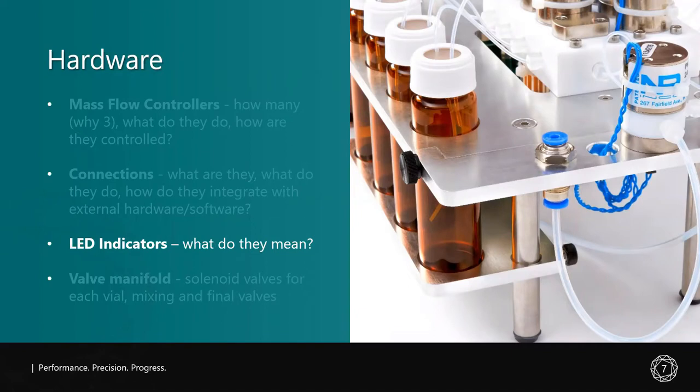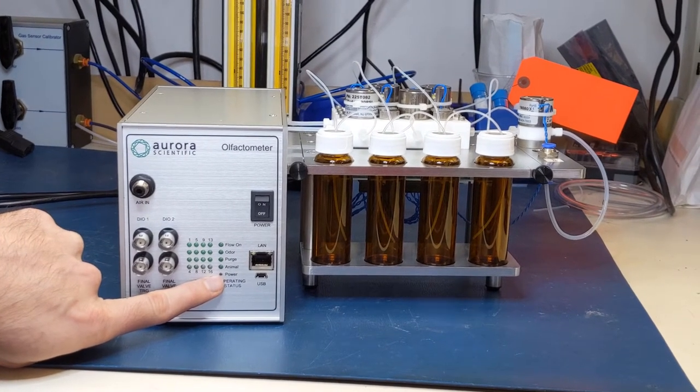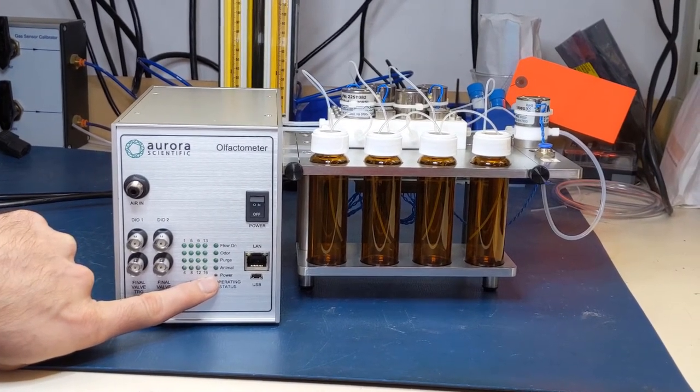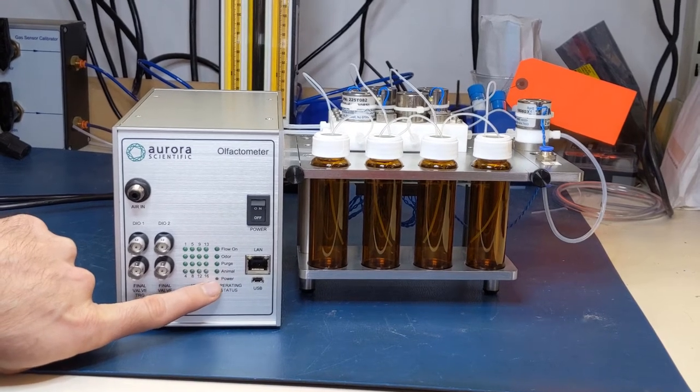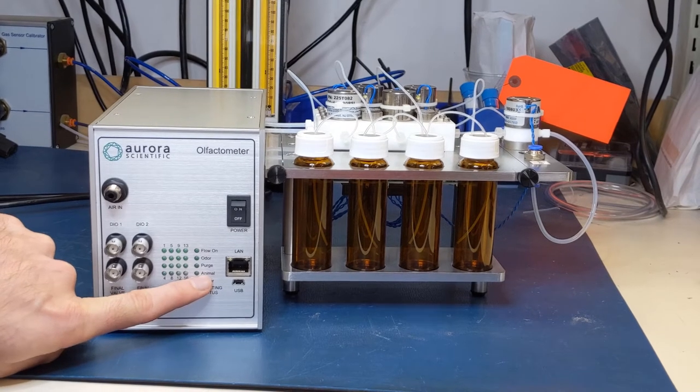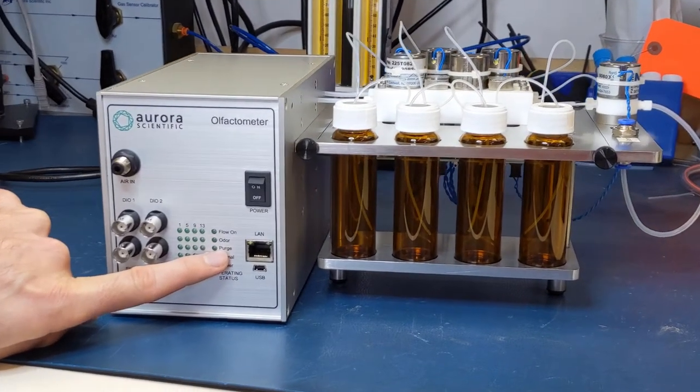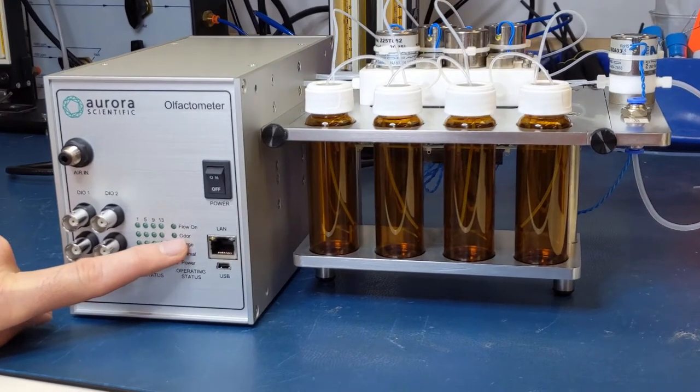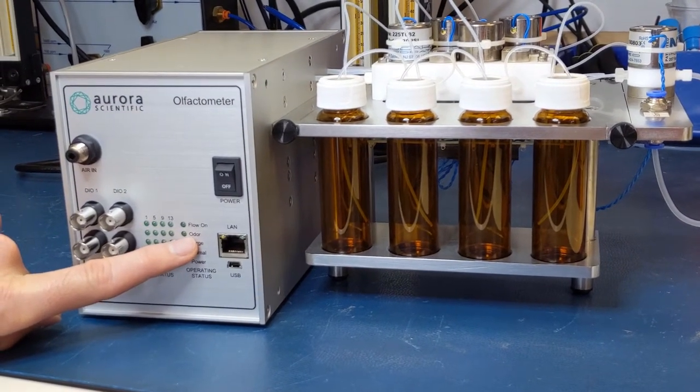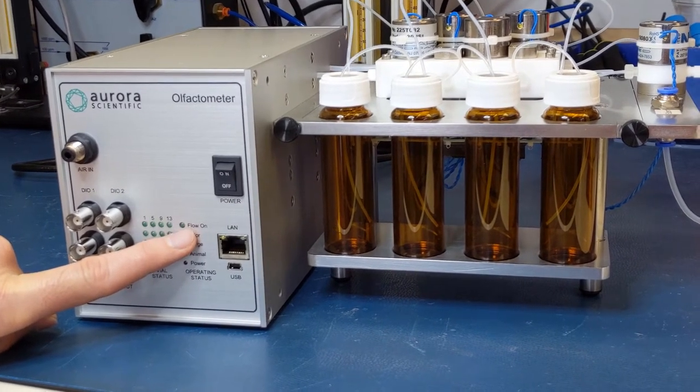You may have noticed numerous green LED indicators on the front panel. What do they mean, and why are there so many? When the power switch is turned on, the power LED will illuminate. Above that are LEDs that indicate odor and flow status. The animal light is on when odor is delivered to the animal. Purge illuminates when purging the system of odorant by opening all valves. Odor LED is on when an odor vial has been selected and in use. And lastly, your flow-on LED will illuminate when air is flowing through the system.